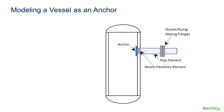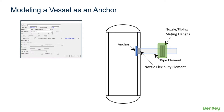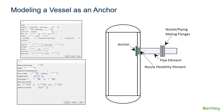When modeling the vessel as an anchor, the first step is to model the nozzle as accurately as possible. If it's a flanged nozzle, model the mating flanges correctly, and then model the protruding length of the nozzle with a small pipe run. The length between the nozzle flange and vessel wall should be modeled as a pipe element in AutoPipe. The nozzle element should be a very short section — the shorter it is, the more accurate — and it should be centered at the wall of the shell since it's meant to model the bending flexibility of the shell wall.